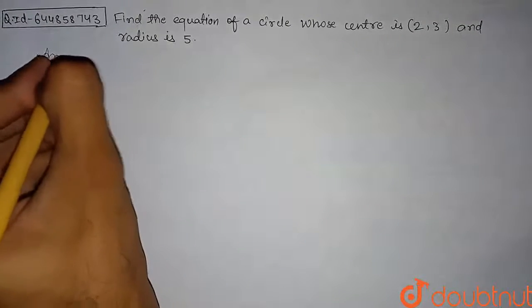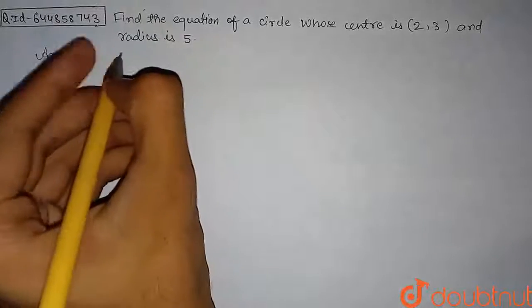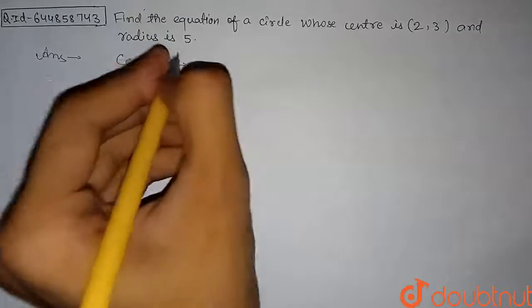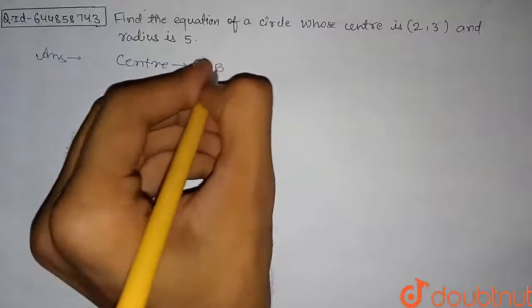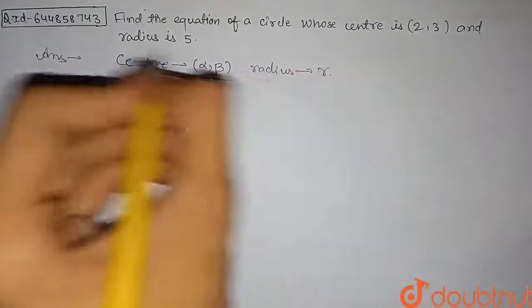So first I will teach you how to find the equation of a circle whose center and radius are given. If (α,β) are the coordinates of the center of a circle and radius of that circle is given as r, then...